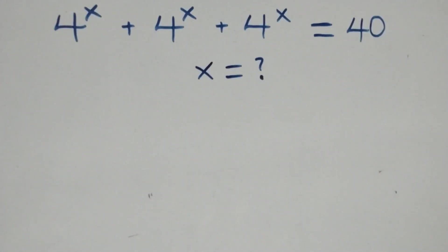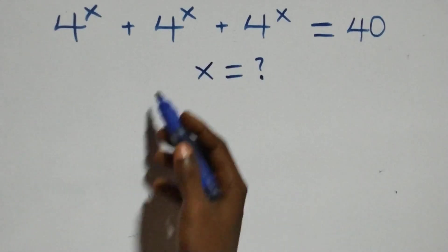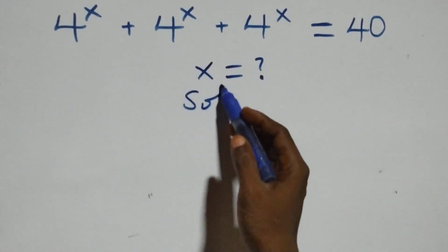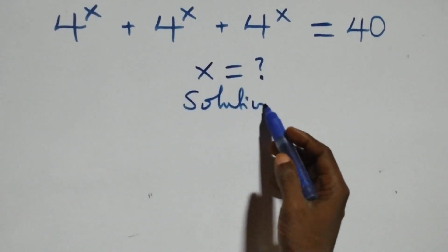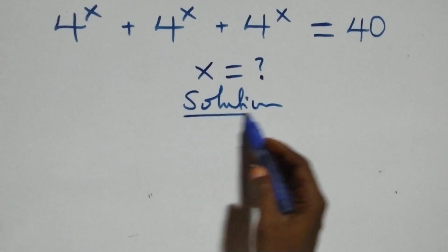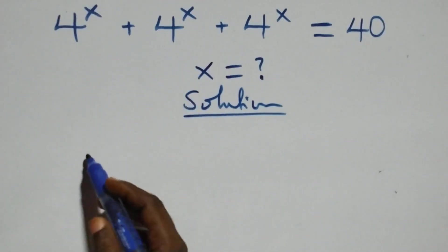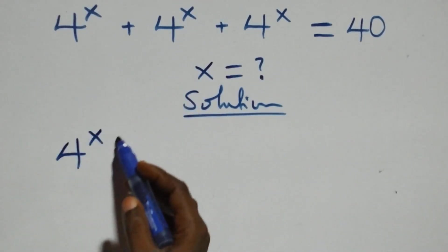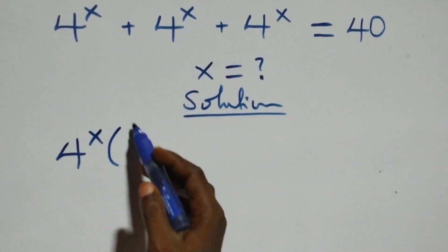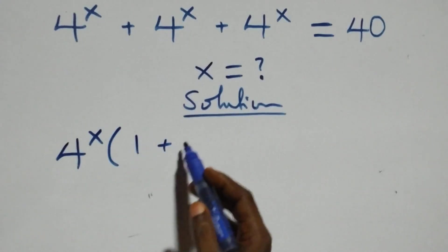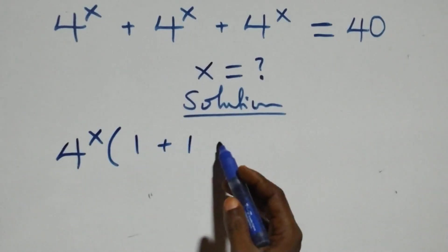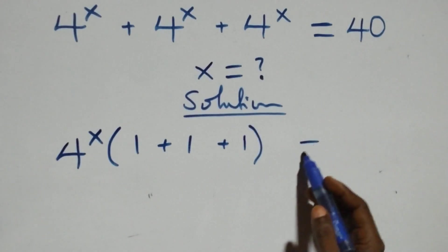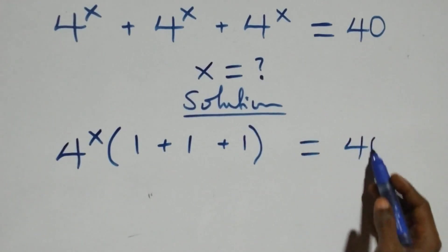Hello, you are welcome. How to solve this nice exponential equation. What do we have here? We factor 4 raised to power x out here. With 4 raised to power x in brackets we have 1 plus 1 plus 1 left, then equals to 40.